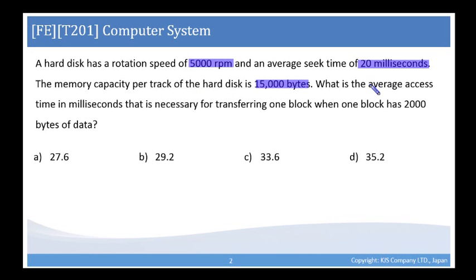Here we're looking for what is the average access time in milliseconds that is necessary for transferring one block when the block has 2000 bytes of data. Is it 27.6, 29.2, 33.6, or 35.2?